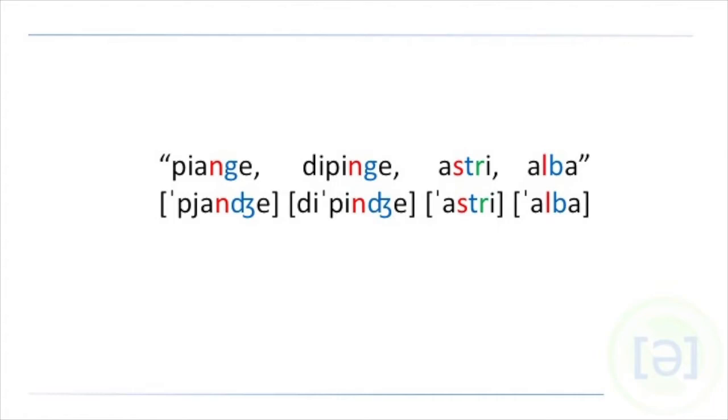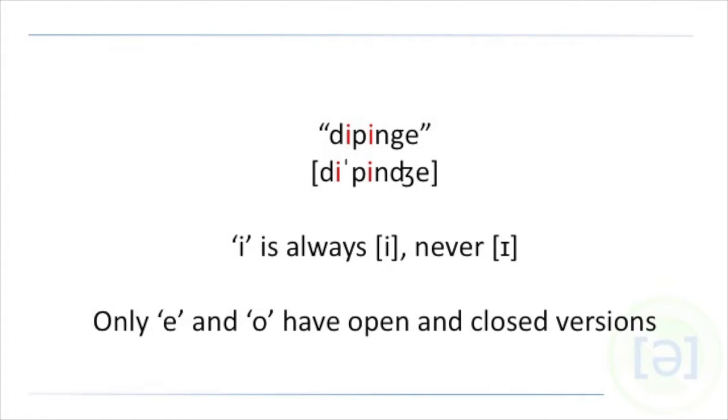But also along with that to remember that there is no open I. They're always an E. It's always an E. We don't open that vowel sound ever. In Italian, we don't have an open eye. It's always a closed vowel. Only the E and O can have open or closed versions.